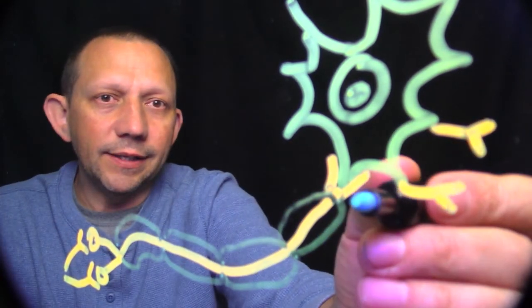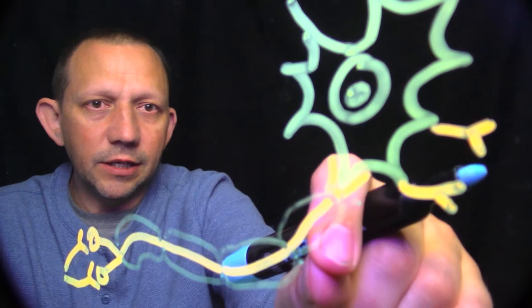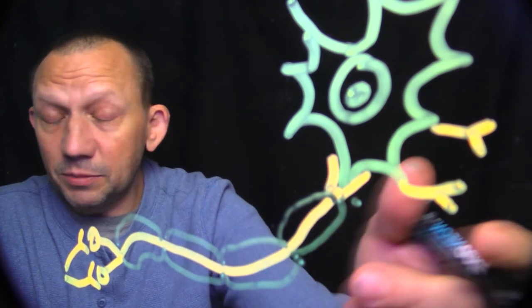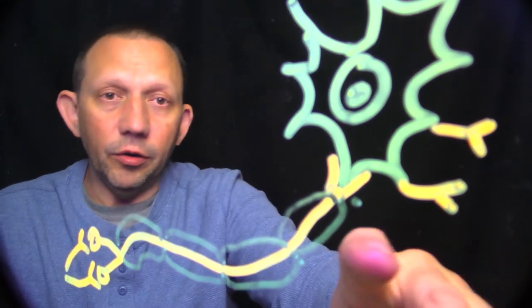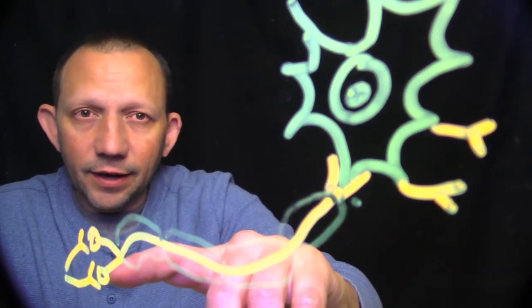A myelin sheath is just an insulator that actually helps this nerve conduction move really fast. They used to call it saltatory and we'd like zap over here, zap over here, but I think what we're actually seeing is it just increases through here because there's a space. Those are all theories and we don't need to get into those.